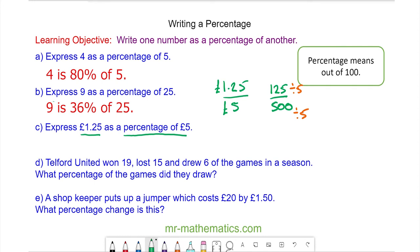So now we have 25 over 100, which is 25 percent. So £1.25 is 25% of £5.